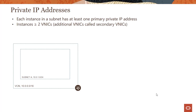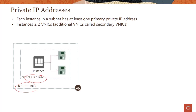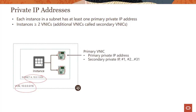You create a virtual cloud network and then divide this network into smaller networks called subnets. You place your instances within subnets, and the instances draw their IP addressing and network configuration from the subnets in which they are placed. This instance has two network interface cards — a primary and a secondary. The primary VNIC has a primary private IP address, and remember, it's mandatory.